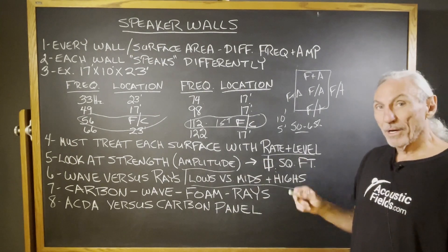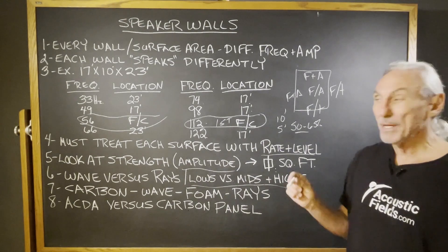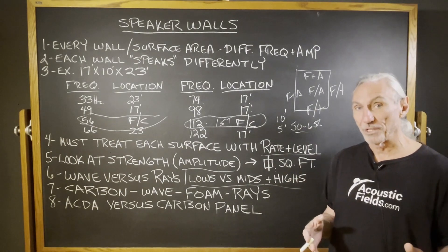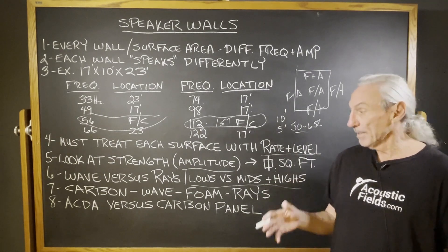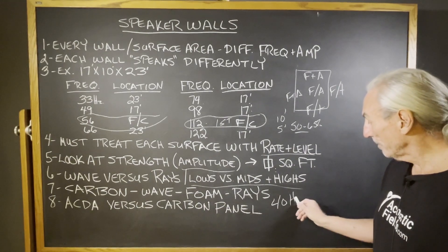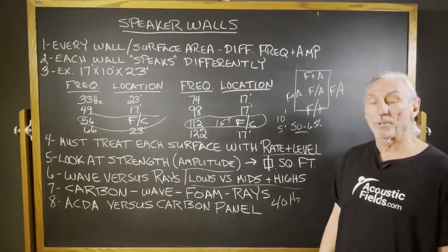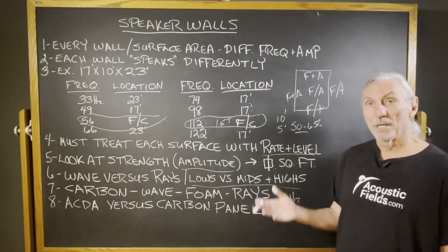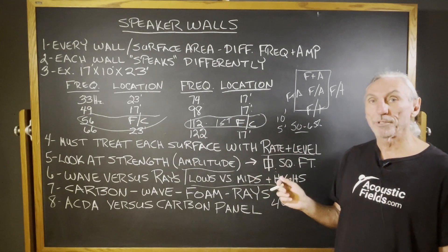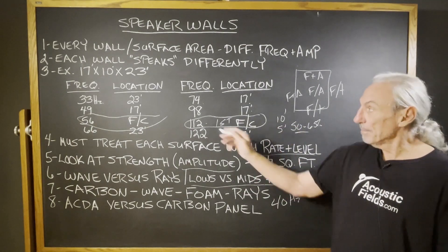Refining that a little further: in our carbon technology we have two products, the ACDA series and the carbon panel. The big difference is that the ACDA series goes down into the 30 hertz region — it's large, 16 inches deep. The carbon panel starts at 40 cycles and is 12 inches deep. That four-inch difference can make a lot of difference because that's eight inches on both walls. You have to see what your problems are, what the room dimensions are, how much square footage you need on each surface, and make sure the treatment matches the problem.